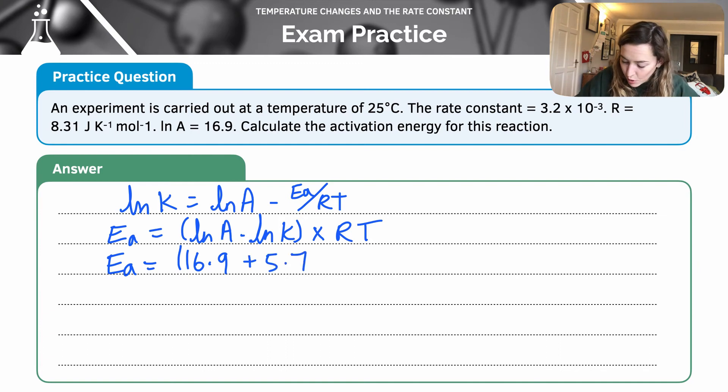Times my gas constant, which is, kindly, we've been reminded, 8.31 times temperature. Now don't forget, that needs to be converted. So 273 plus 25 is 298. So I'm going to plug all of that into my calculator. And I'll get my answer of 56,076 joules per mole.